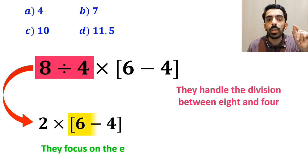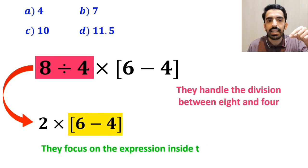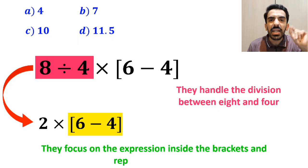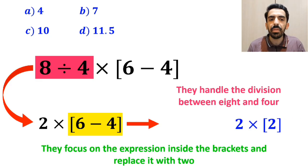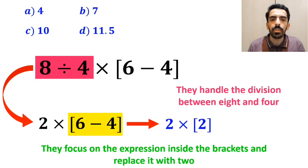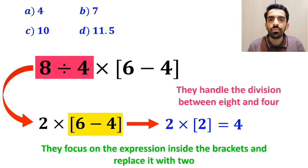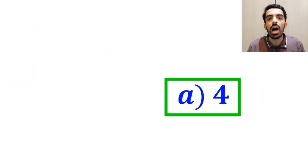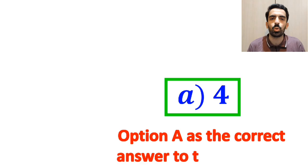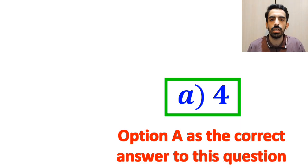In the final step, they focus on the expression inside the brackets and replace it with 2. So this expression becomes 2 multiplied by 2, which equals 4. Then they quickly look at the options and choose option A as the correct answer to this question.